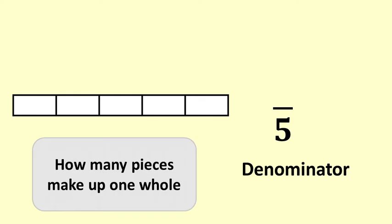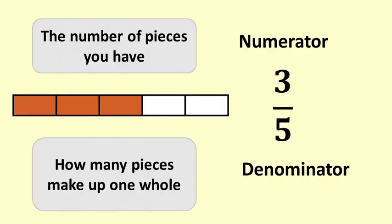The denominator is the number on the bottom of the fraction that tells you the size of each piece by telling you how many pieces make up one whole. The numerator is the number on the top that tells you how many pieces you have.